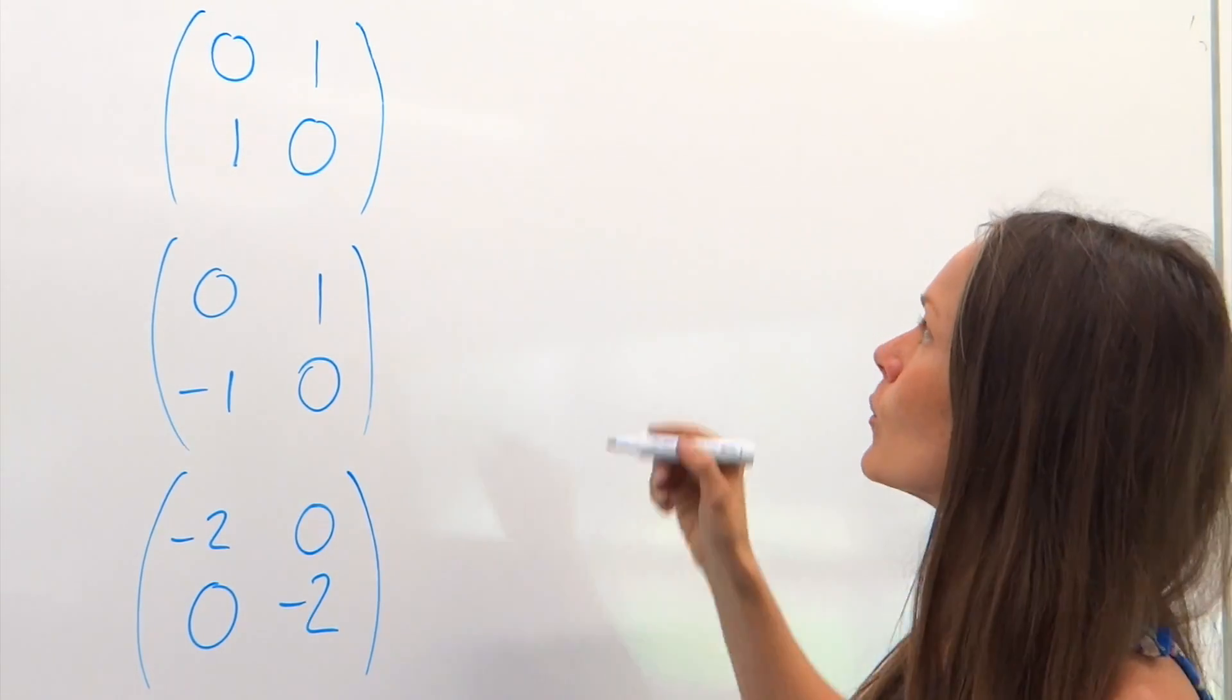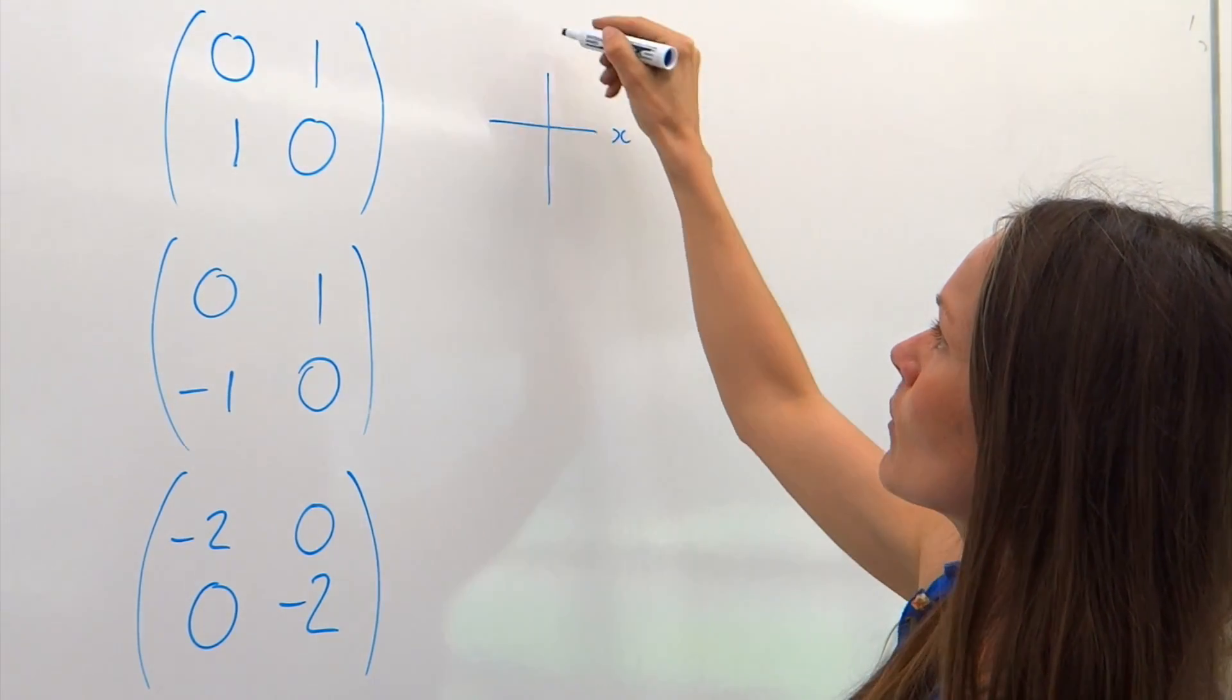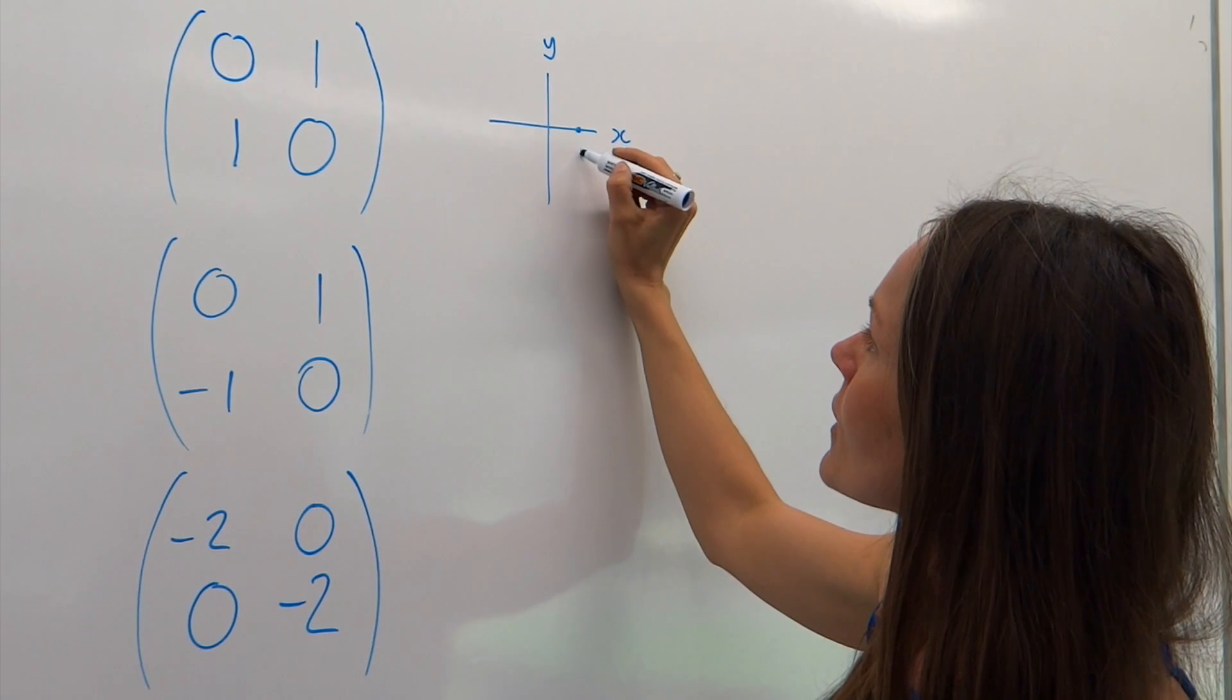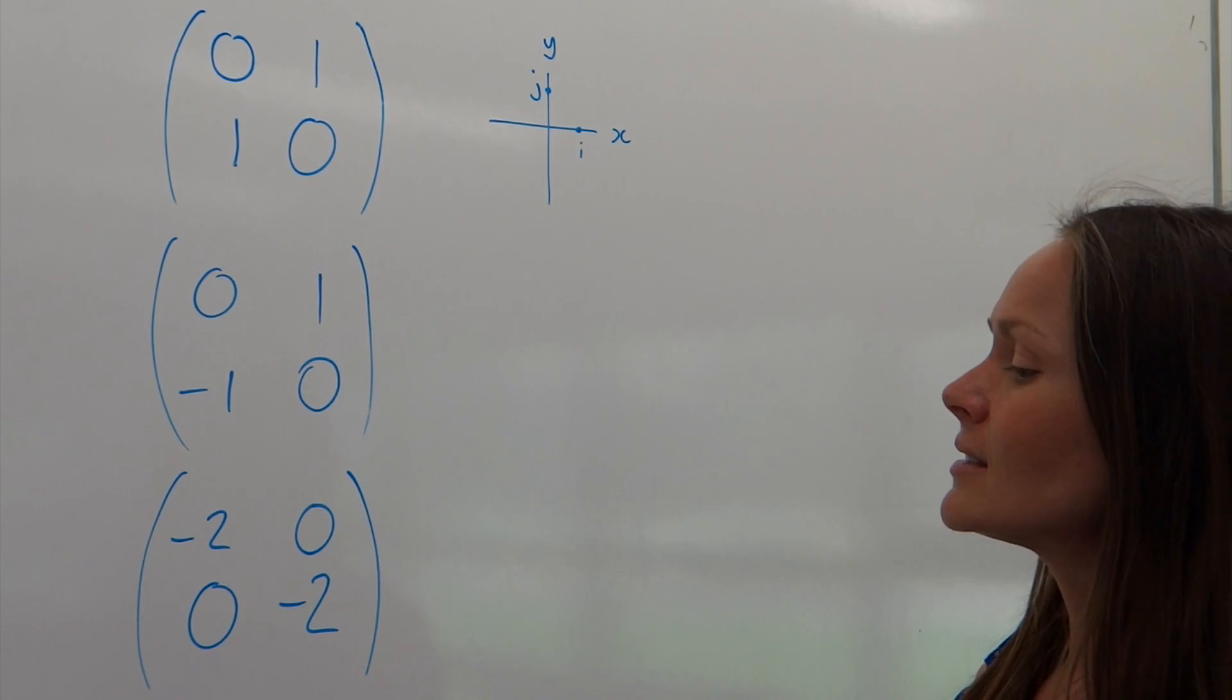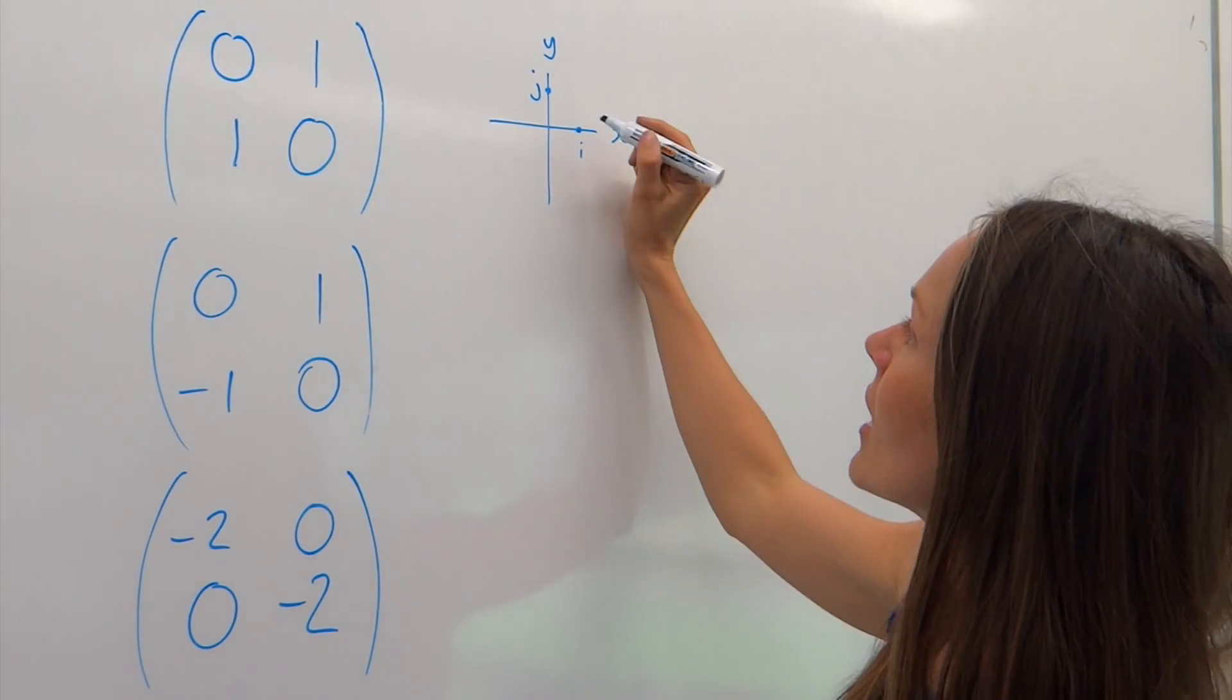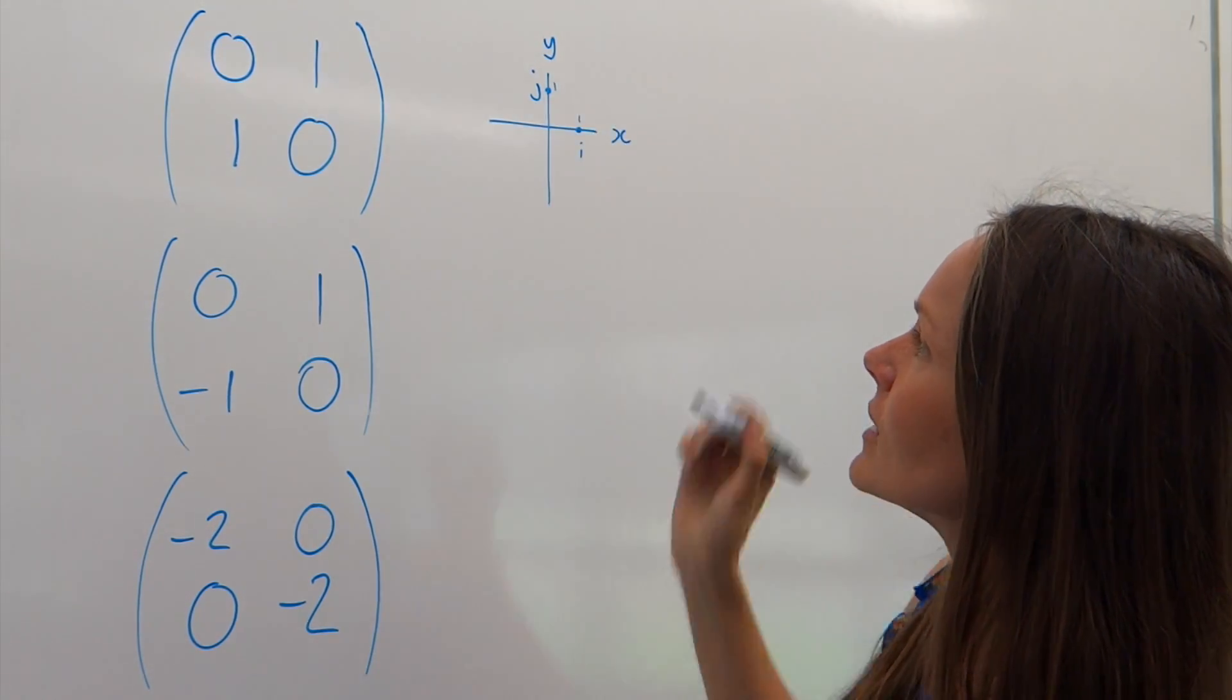So, we're going to start by drawing a little axis. We've got my x-axis here and my y-axis. And we're going to use something called base vectors. Now, these are my base vectors, i and j, and they're always positioned in the same place to start with. i is always one unit along, and j is always one unit up.